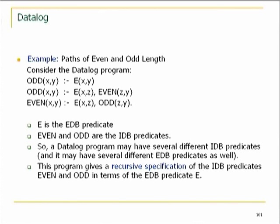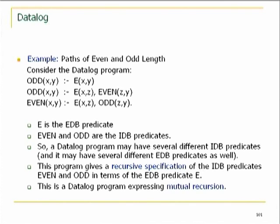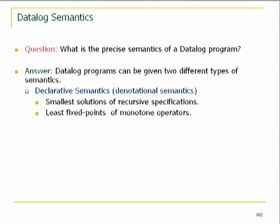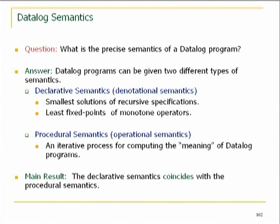We can think of the Datalog program as giving a recursive specification of the IDB predicates — even and odd — in terms of the EDB predicate E, which is given to us. What is the precise semantics of a Datalog program? We can give two types: declarative semantics and procedural semantics, and then prove they match. The declarative is like denotational semantics — you give an object which is the meaning of the program. The procedural gives an algorithm for computing these semantics.